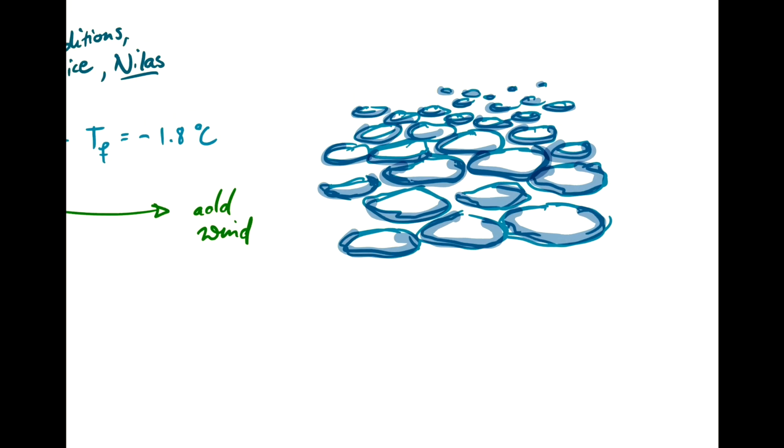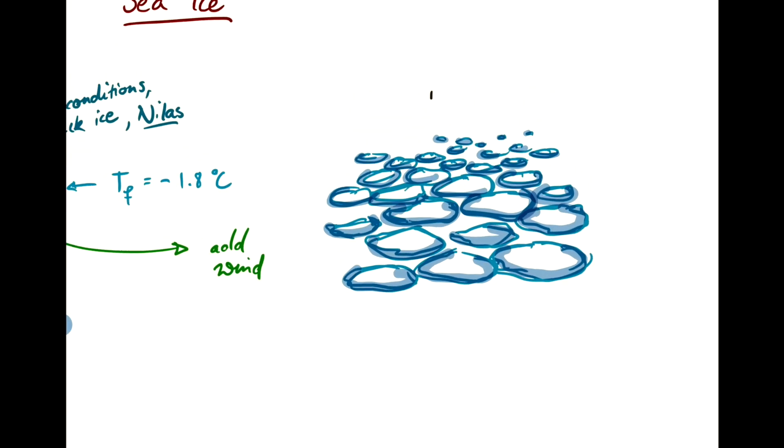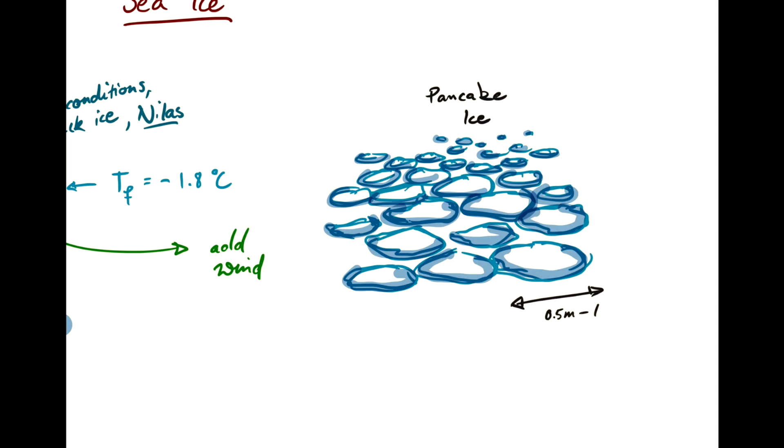And this type of ice we call pancake ice. And the diameter of these pancakes is on the order of half a meter to five or ten meters.